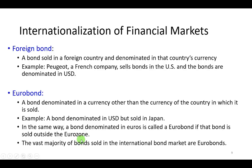A few other definitions are covered in this introduction. A foreign bond is a bond sold in a foreign country and denominated in that country's currency. For example, if an American company like Walmart goes to Singapore to sell bonds in Singaporean currency, that's a foreign bond. Another example is Peugeot — a French company selling bonds here in the United States — denominated in our home currency, the U.S. dollar, whose international symbol is USD.